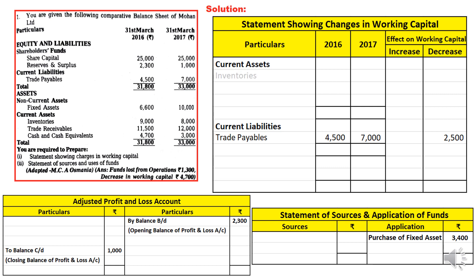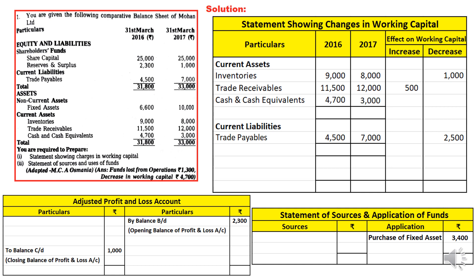Coming to current assets: inventories were 9,000 last year, 8,000 this year — a decrease in inventories means a decrease in current assets, leading to a decrease in working capital. Trade receivables have increased — an increase in current assets leads to an increase in working capital. Cash and cash equivalents: 4,700 down to 3,000 — a decrease, meaning a decrease in working capital. In this way, we cover all current assets and then close the current assets section.